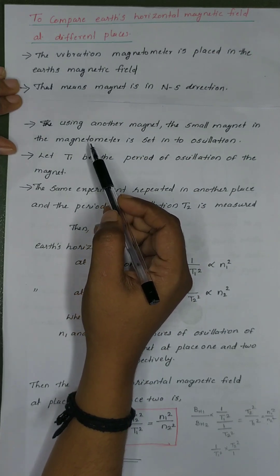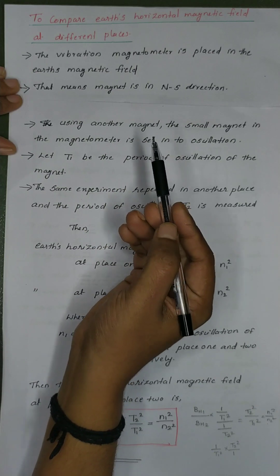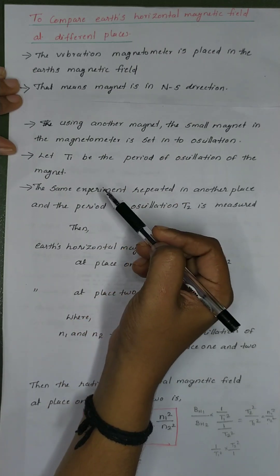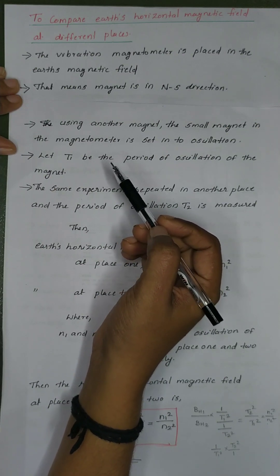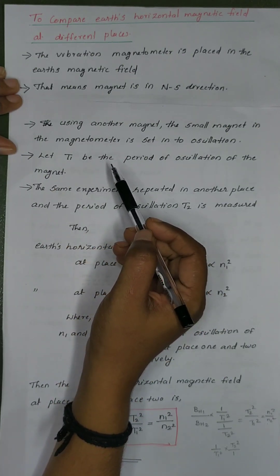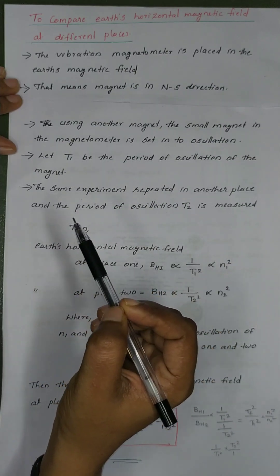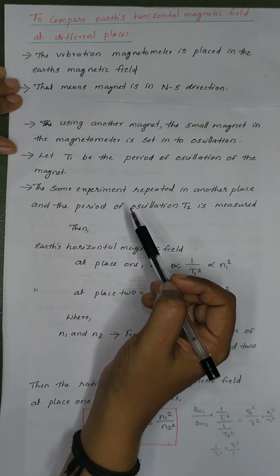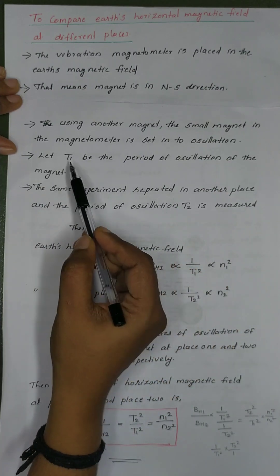We place a magnet in the Earth's magnetic field and oscillate the small magnet, counting the number of oscillations. The period of oscillation measured at this location is called T1.